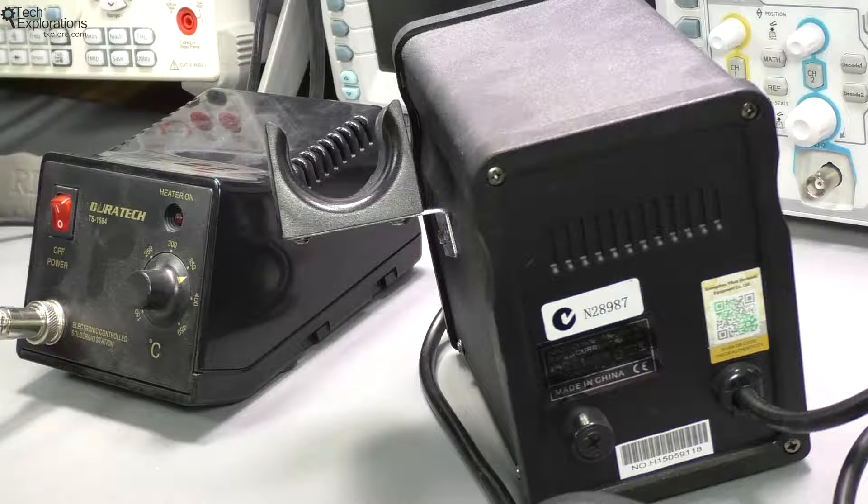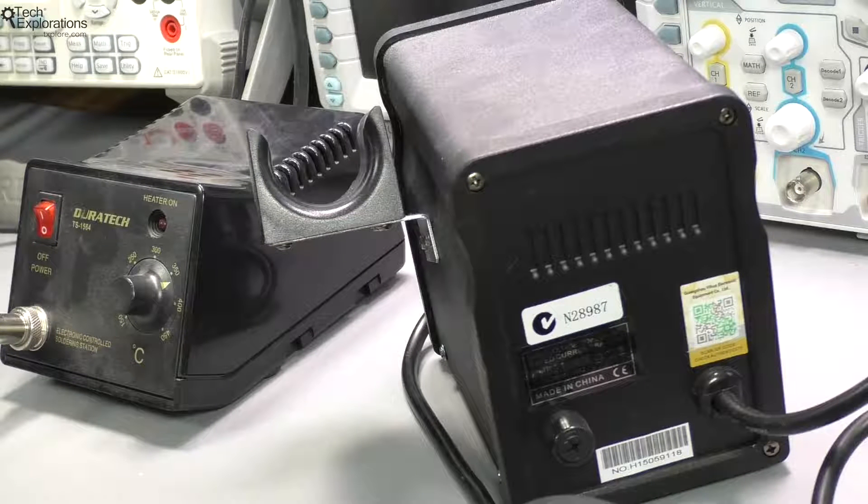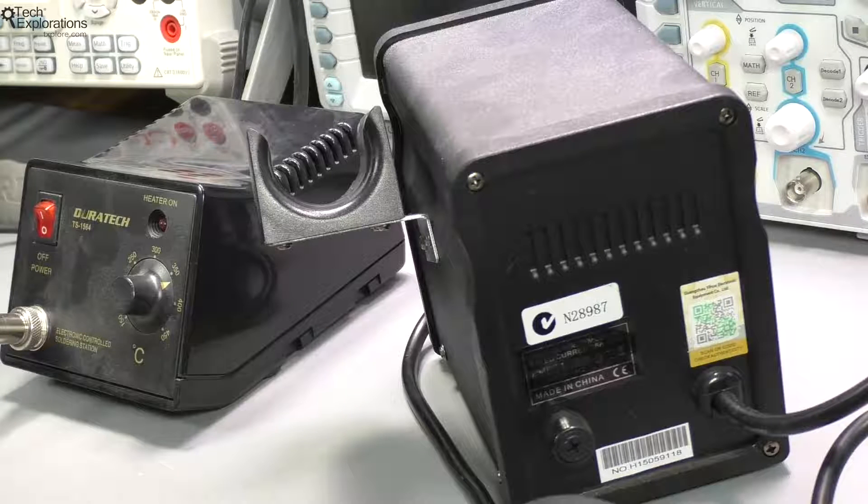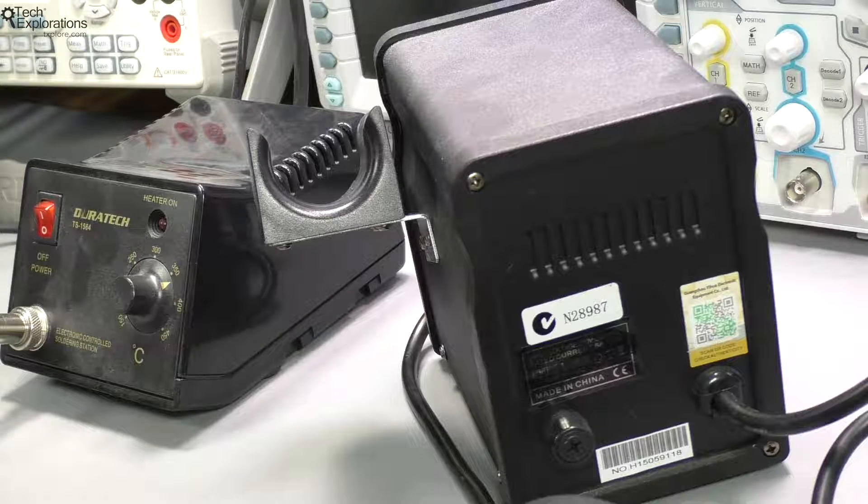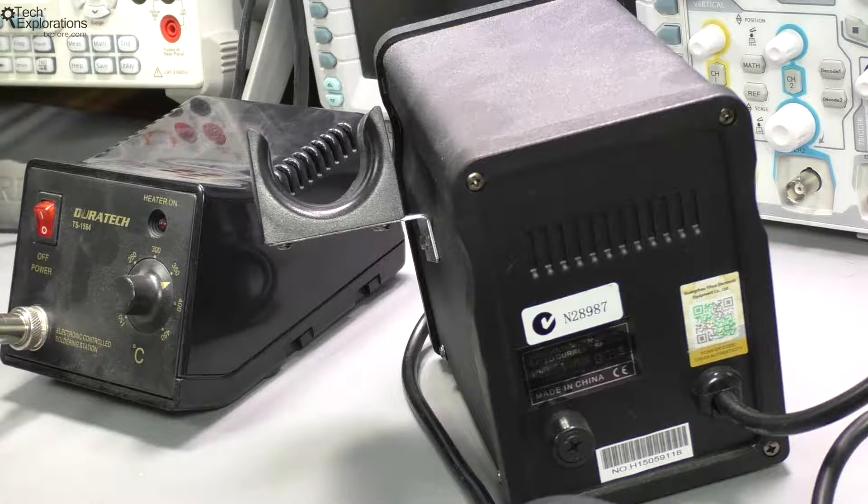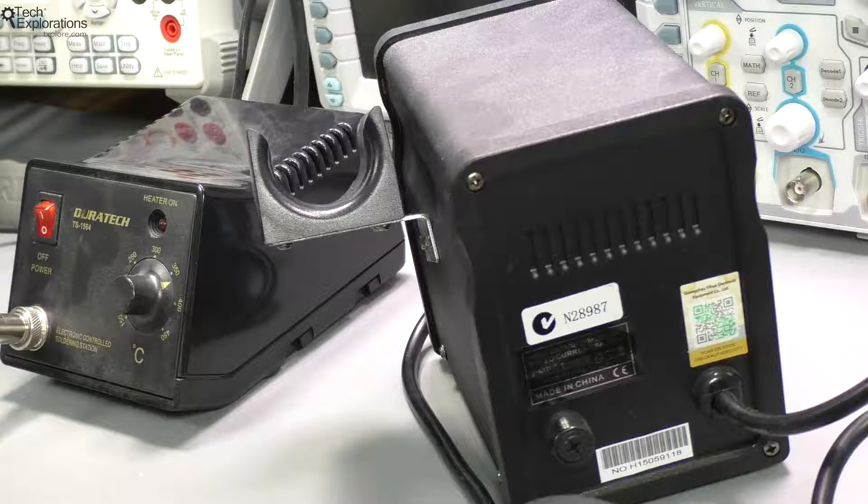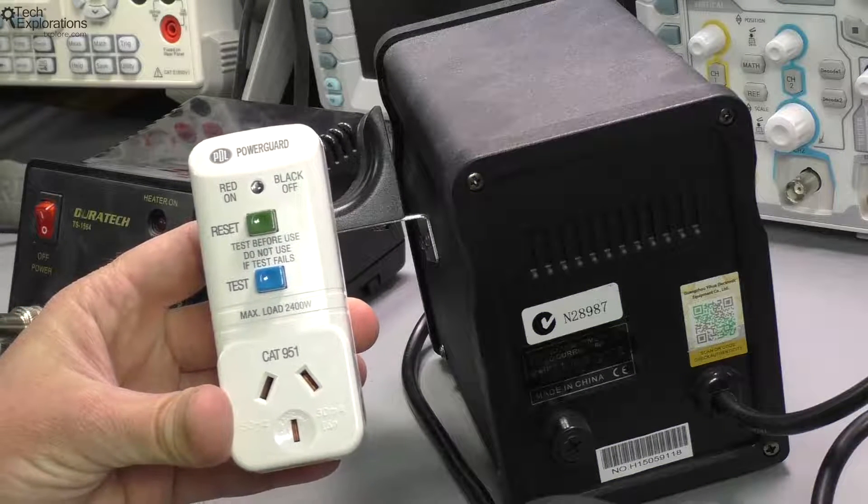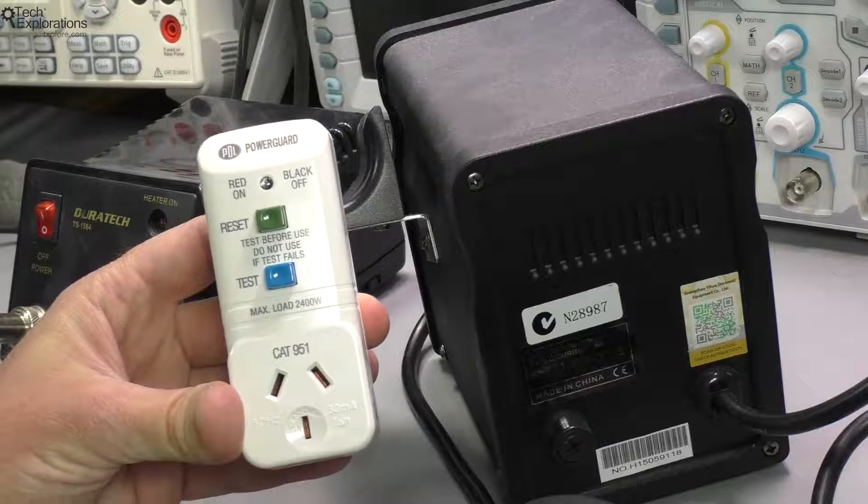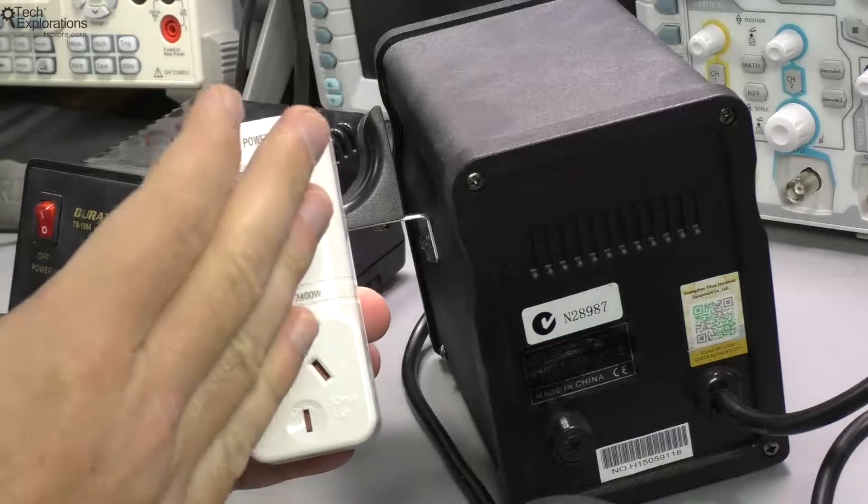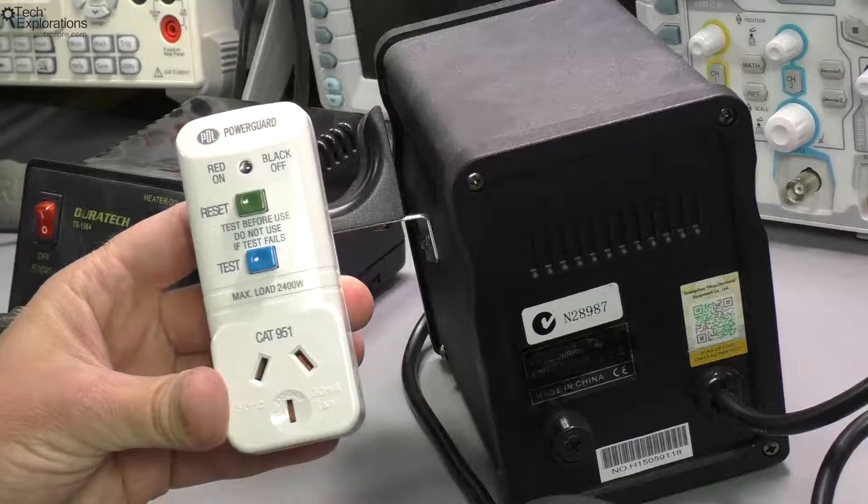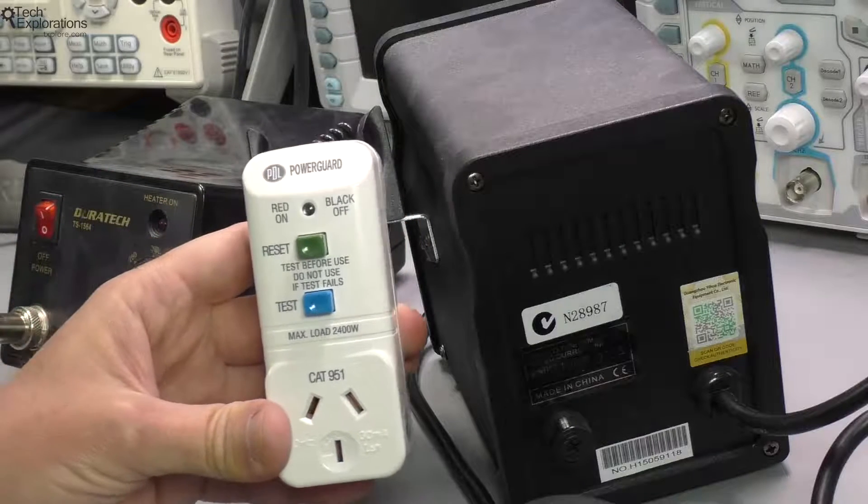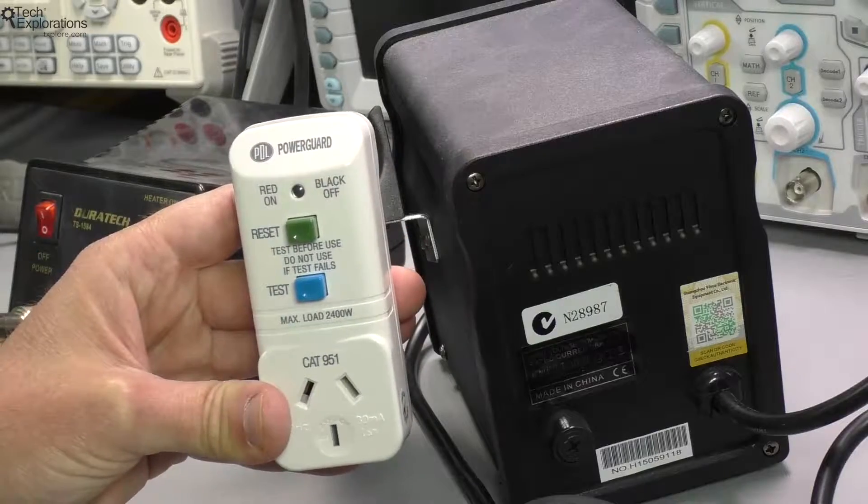Before I finish this lecture I wish to reiterate that working with mains devices is dangerous and can be fatal. I don't recommend you doing anything that I demonstrate unless you're absolutely sure that you understand what is going on and that you are adequately protected. I remind you that I'm using one of these devices - it's a residual current device. It provides just a little bit of extra protection in case I do something wrong and have current flowing from the device to me and then via me to the ground. That has the potential to cause a lot of damage plus death.